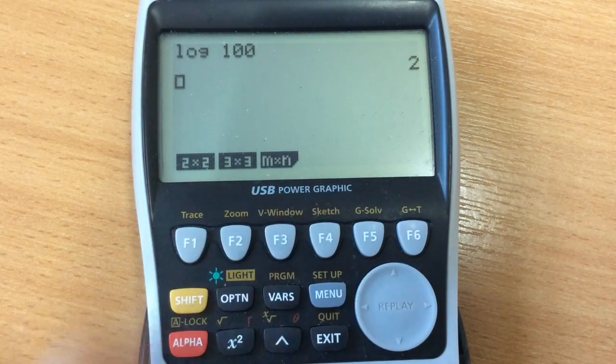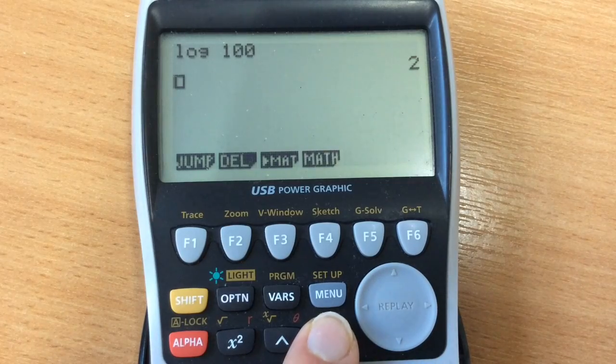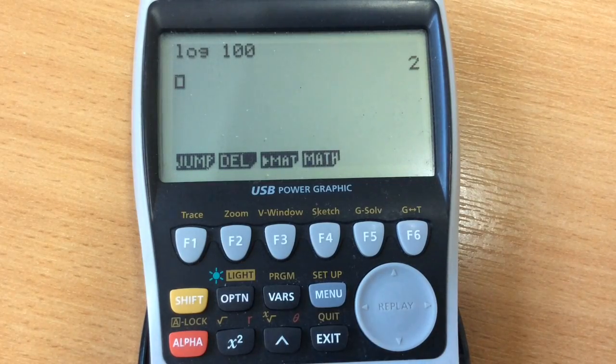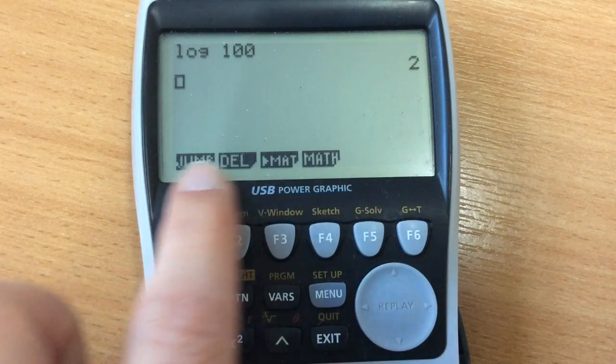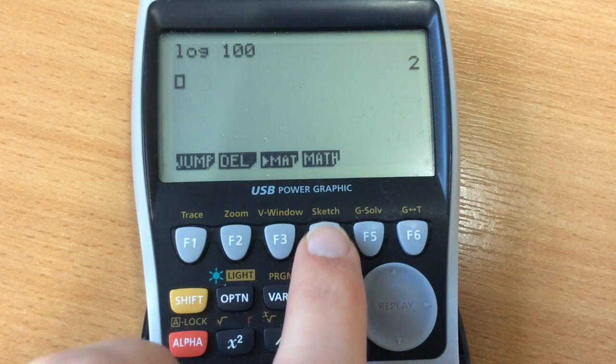And here, these are not the options that we want, so I'm going to repeatedly press exit until I get back to the standard menu. This is what you would usually have for the four different options. Going into math...